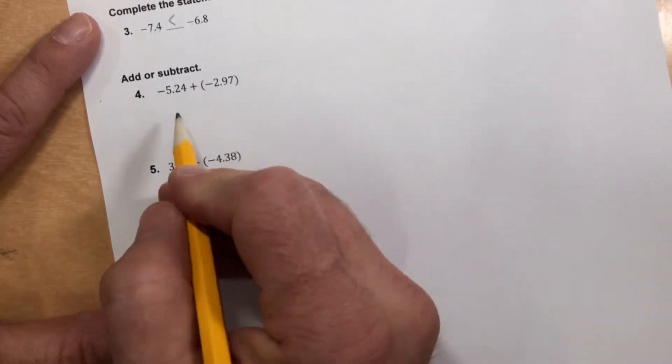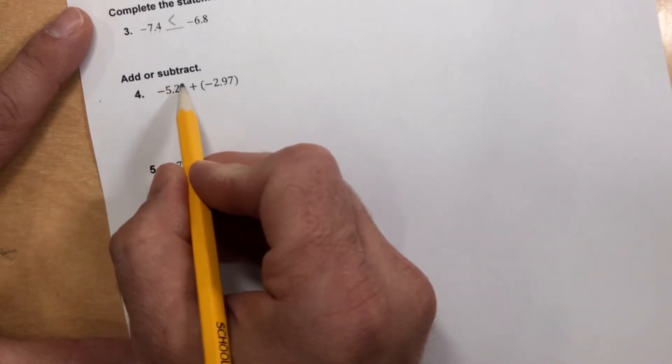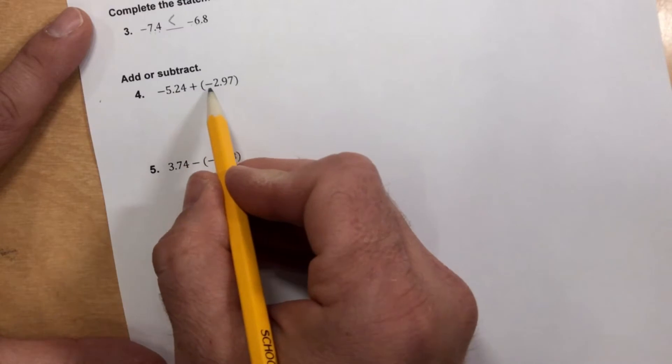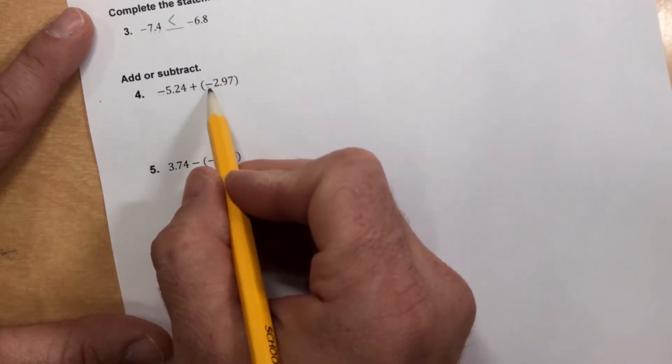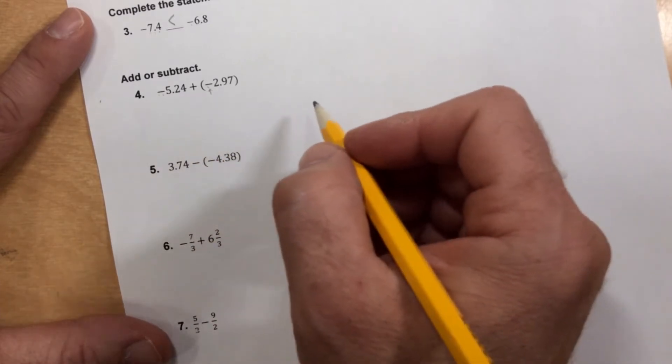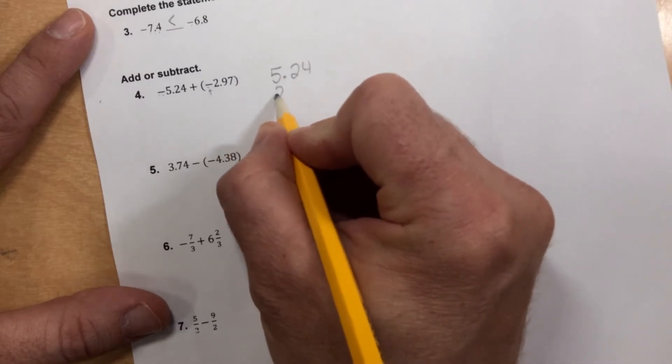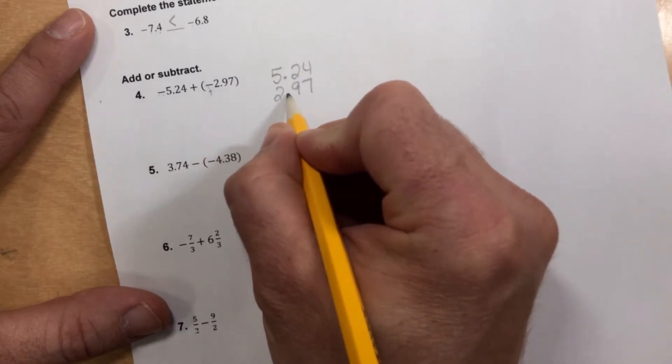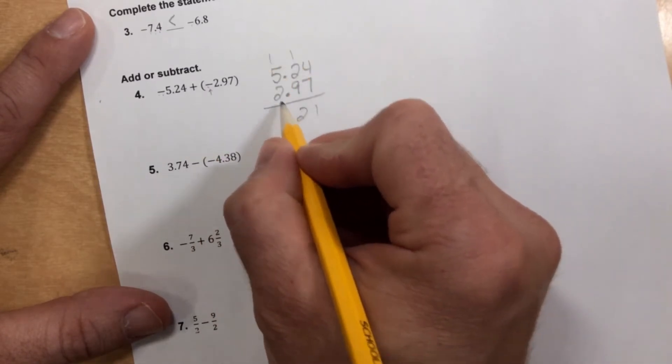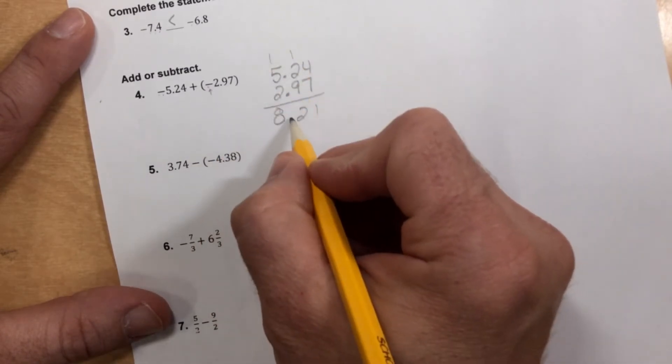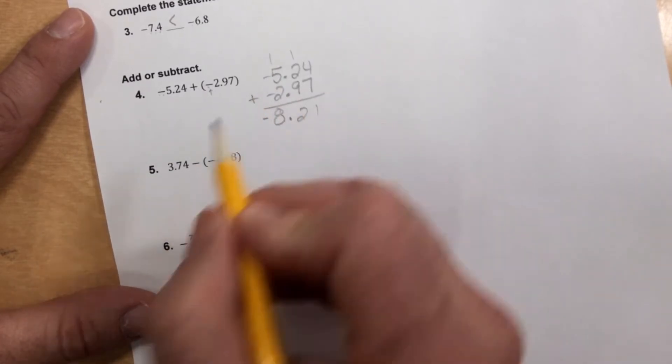Number 4. Add or subtract. Well, we're adding this one, and it says negative 5.24, negative 2.97. Same sign. So we're going to add and keep. So we have to keep the negative sign in our answer. 5.24, 2.97, lining up the decimals, of course. And when we add these, don't forget to drop the decimal down. We do keep it negative. Same sign. Add and keep.